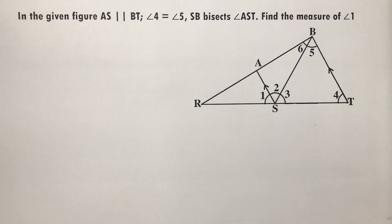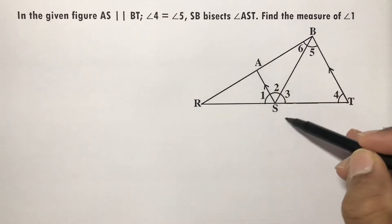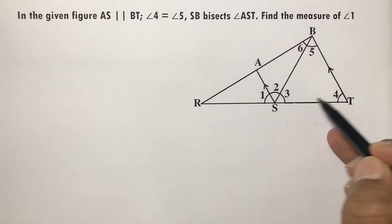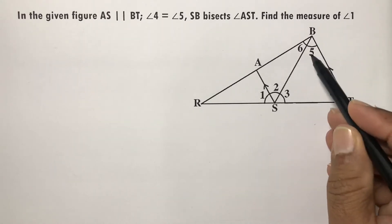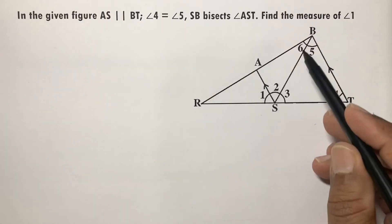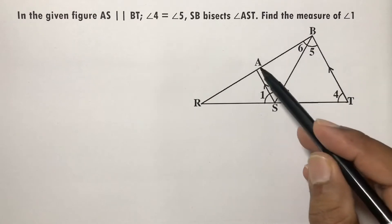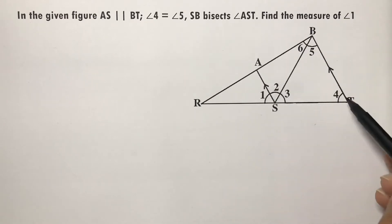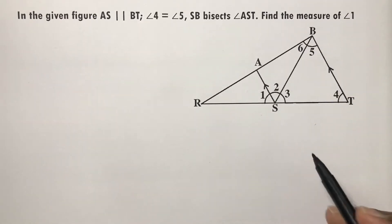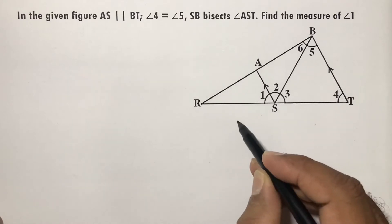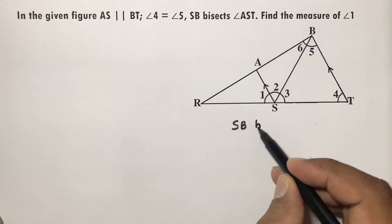In the given figure, AS is parallel to BT, angle 4 equals angle 5, and SB bisects angle AST.